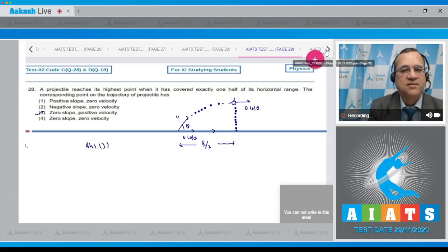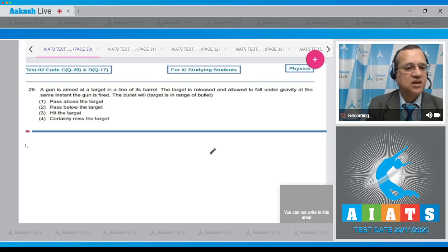Therefore, zero slope and positive velocity - answer to this question is the third option. Question number 29: A gun is aimed at a target in line of its barrel. The target is released and allowed to fall under gravity at the same instant the gun is fired. The bullet will hit the target if the target is in the range of the bullet. From here, we will aim the gun toward the target - this is the target. Now as soon as this bullet is fired, the target is dropped.